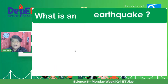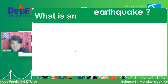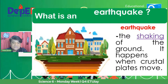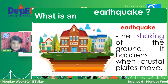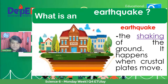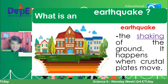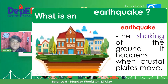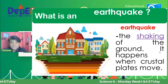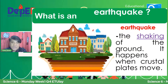So what is an earthquake? Earthquake sa Tagalog, lindol. When we say earthquake, this is the shaking of the ground. Una-munang gagalaw yung ground, then gagalaw yung mga nasa ibabaw ng Earth — pwedeng buildings, pwedeng mga plants, mga mountains. It happens when crustal plates move. Nangyayari ang earthquake kapag yung mga crustal plates na yan gumagalaw. So magkakaroon ng tinatawag nating earthquake.